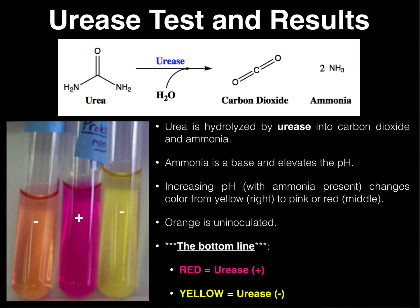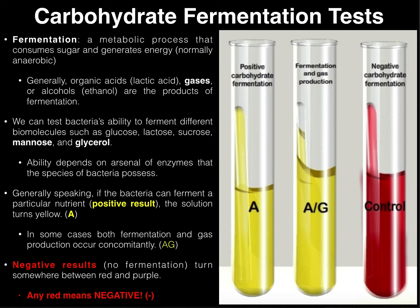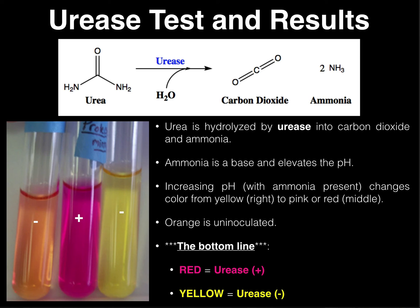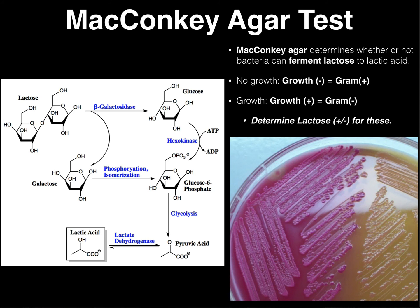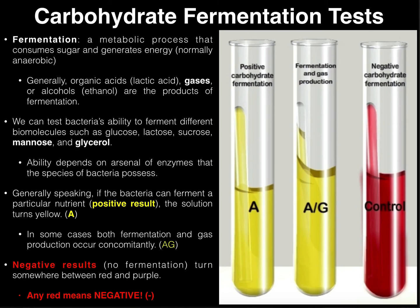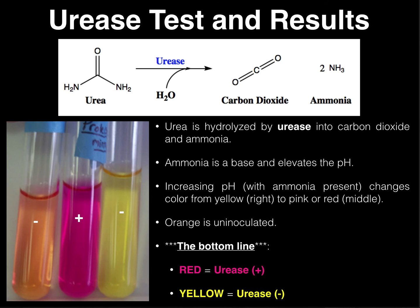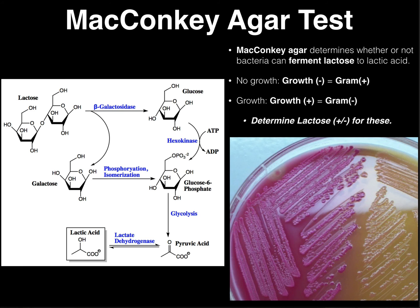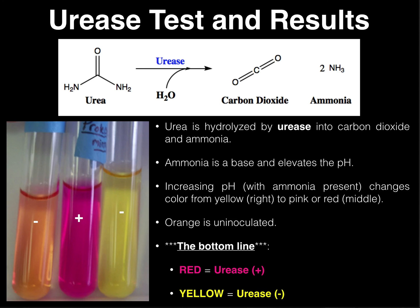Now that we've covered the urease test, I want to mention something about the tests for this week. We covered four tests: MacConkey agar, carbohydrate fermentation, triple sugar iron, and of course the urease test. They all four have a pH indicator, and it's pretty much the same for almost all of them. For MacConkey agar the pH indicator was neutral red, but for the others — carbohydrate fermentation, triple sugar iron (TSI), and urease — those three were phenol red. So every one of your pH indicators this week ends in red.